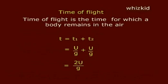Time of flight. Time of flight is the time for which a body remains in the air. T is equal to T1 plus T2, that is equal to u by g plus u by g, that is equal to 2u by g.